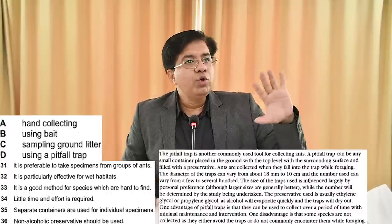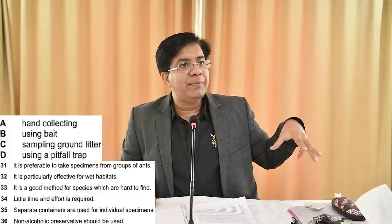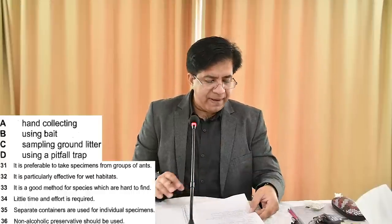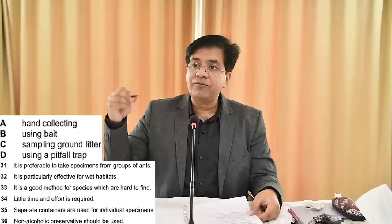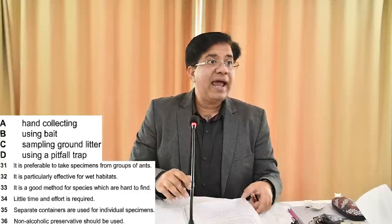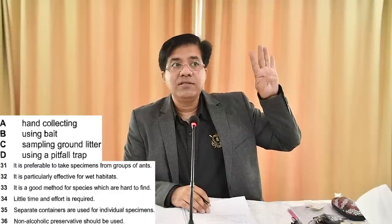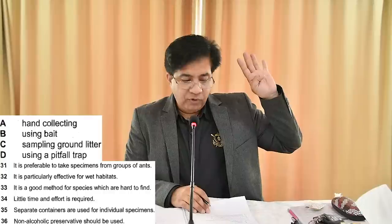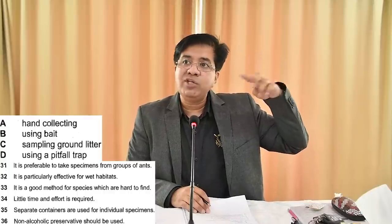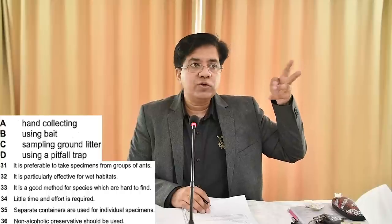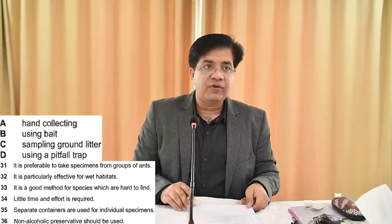Here is how to do it: come to option A, skim-read everything about option A, then go through questions 31 to 36. One important thing — there are four options but six questions, which means one option can be used twice. So make sure you do it properly. I'll give you six minutes for this.